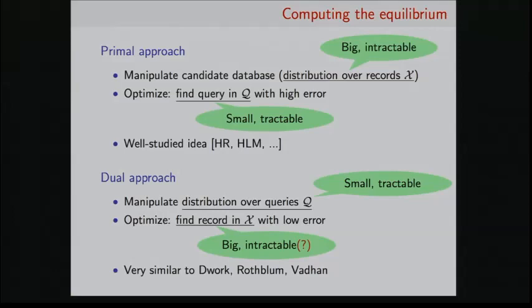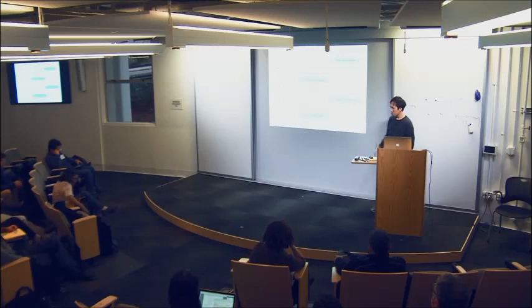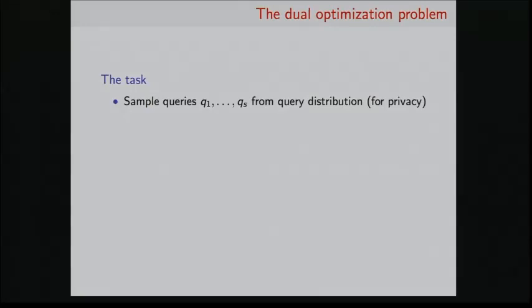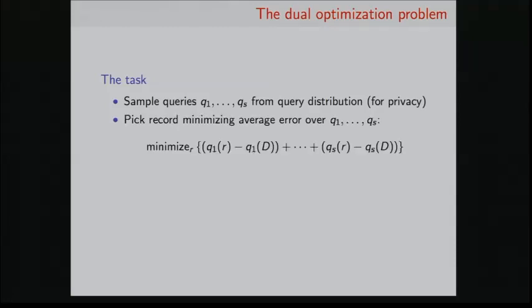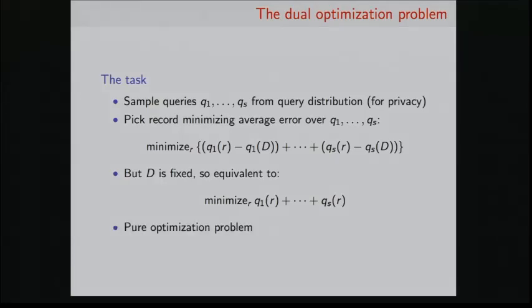So I want to focus on this step here, this optimization problem here, to see really how intractable is it and what exactly is going on. So let's take a closer look at the dual optimization problem. The main task is we will sample queries from our query distribution called Q1 through QS. And we need to do this for privacy, which I'm not going to talk about too much. But let's just say that we're given these queries Q1 through QS. And what we want to do now is we want to find a record that minimizes the average error over these queries. So that's just this quantity here. You can see that each term here is the error. This is the error on query QS of R. However, we note that this database D here is fixed. It's not really part of the optimization, so this is really equivalent to solving this problem now. And this problem we'll see is just really a pure optimization problem. A particular form might depend on what these queries are, but this is just a really standard optimization problem. There are no privacy concerns at all here anymore. So we're free to use whatever constraint-solving technology we want to solve this problem.